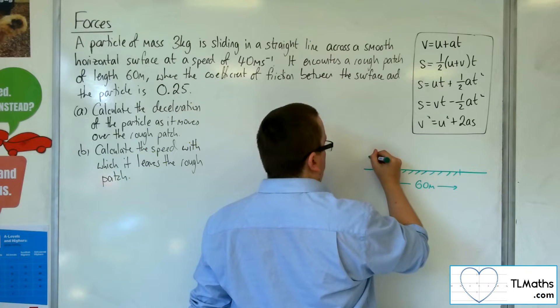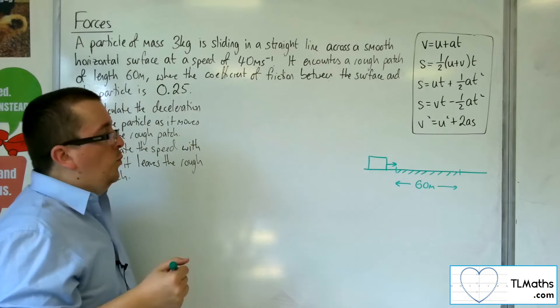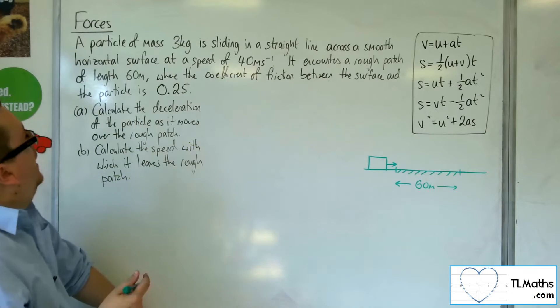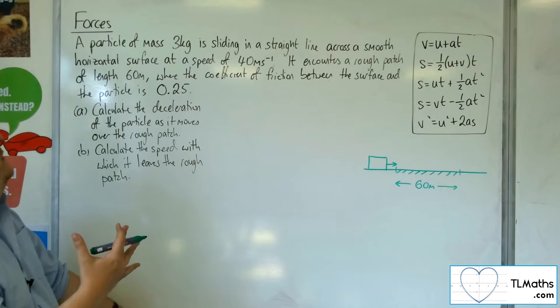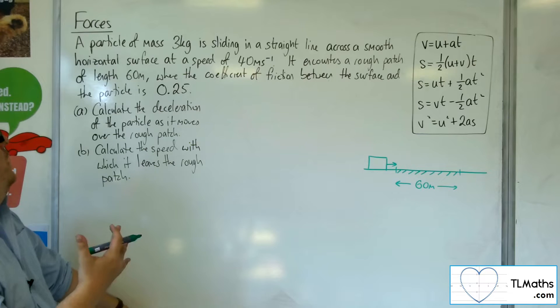So our particle is heading towards it at 40 metres per second. So it crosses over onto the rough patch at 40 metres per second.